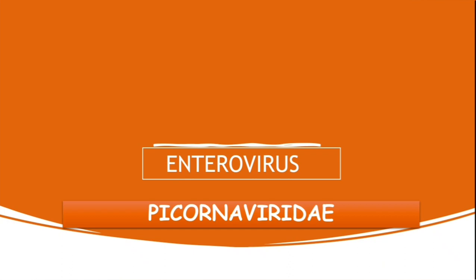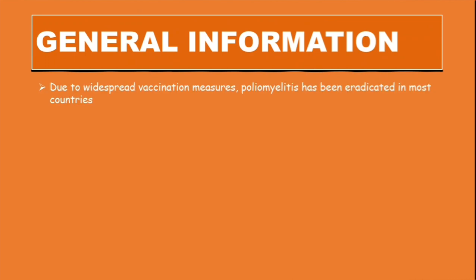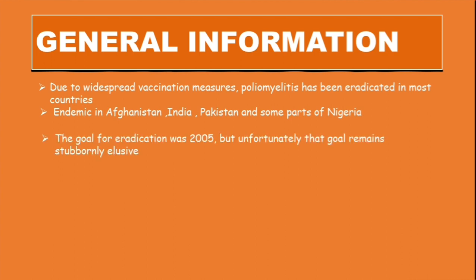The virus is called the poliovirus. Due to widespread vaccination measures and improved sanitation, poliomyelitis has been eradicated in most countries, but it is still endemic in Afghanistan, India, Pakistan, and some parts of Nigeria. The goal for eradication was 2005, but unfortunately that goal remains stubbornly elusive.